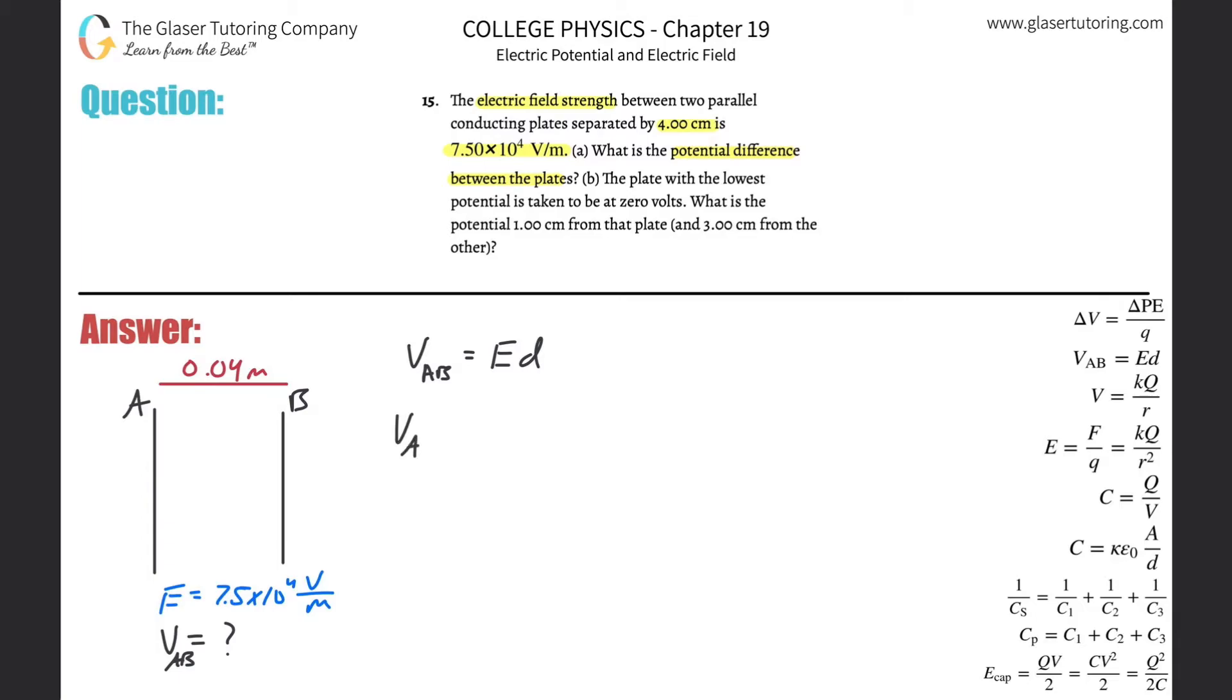So the voltage here will be equal to then simply the electric field strength 7.5 times 10 to the 4th, multiplied by that distance of 0.04. So let's throw that on into the calculator. So we get 7.5 times 10 to the 4th times 0.04, and we get about 3,000. So we get 3,000 volts. That is the potential difference between the two plates.